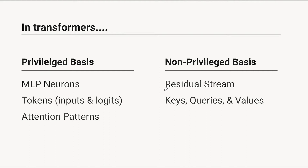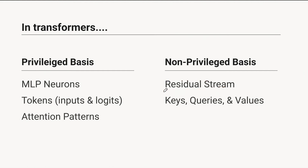On the other hand, the residual stream — from the moment you do your first token embedding, you take your tokens and multiply them by a matrix or look up a vector — there is nothing about that that is privileging any dimension in that operation. And when you add things into your residual stream at every step, whether you add the outputs of the MLPs or the outputs of your attention heads projected into the residual stream, all of that is just something you could apply an arbitrary linear transformation to and get the same results. So your residual stream is not a privileged basis.